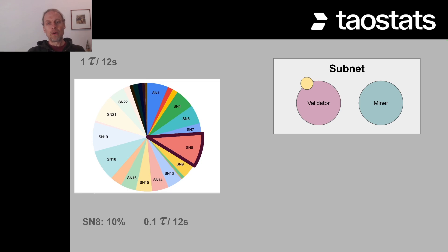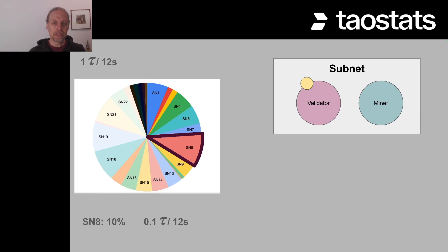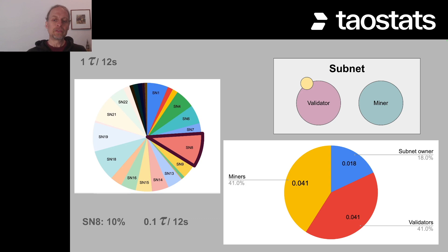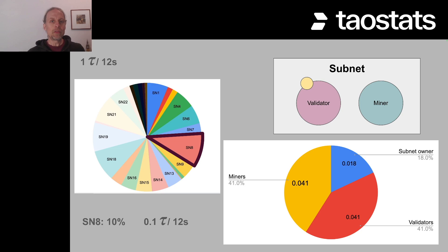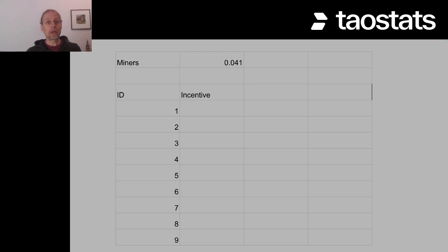Now we have 0.1 TAU every 12 seconds to divide among all the people involved with the subnet. The first division is between the subnet owner, the miners, and the validators. The subnet owner gets 18%, so 18% of 0.1 is 0.018. The remaining amount is split roughly 41/41 between miners and validators: 0.041 TAU to the miners and 0.041 TAU to the validators.